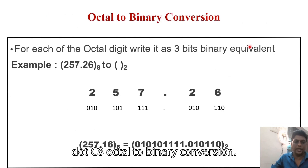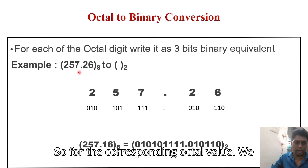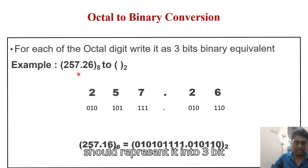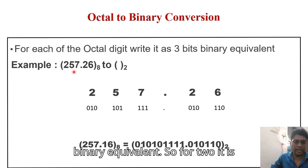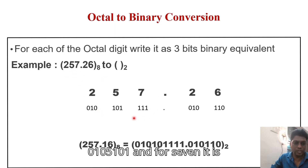For octal to binary conversion, represent each octal digit as its 3-bit binary equivalent. For example: 2 is 010, 5 is 101, 7 is 111. The same approach applies for numbers with fractional parts like 2.6.